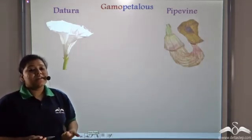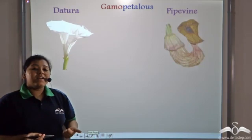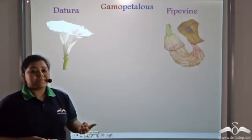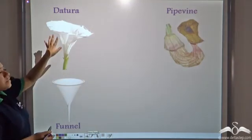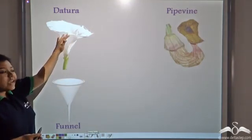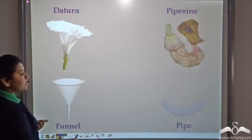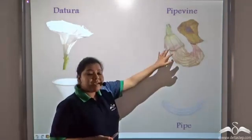Now, gamopetalous corolla generally are found in two shapes. They can either be funnel shaped like in the case of Datura, or they can be pipe shaped like that of a pipe vine.